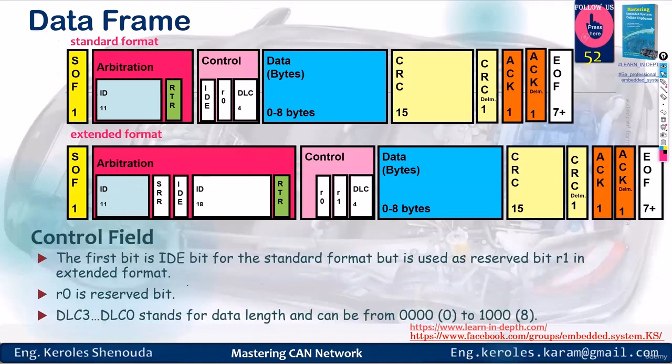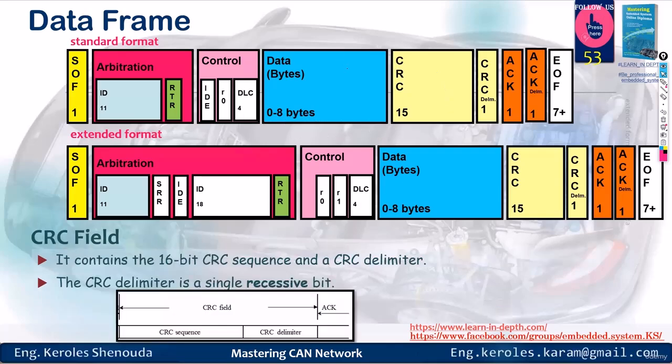All right, team, let's tune in on this together. So, what's this DLC we're hearing about? It stands for Data Length Counter. What does that mean? It signifies whether you're going to send one byte of data or eight bytes. The maximum it can hold is eight. So, after setting the DLC, it sends eight bytes. Therefore, a CAN frame can accommodate up to eight bytes in a single frame. Keep this in mind.